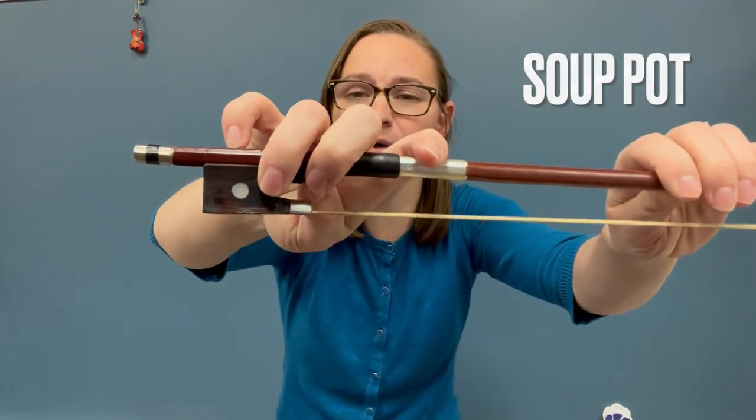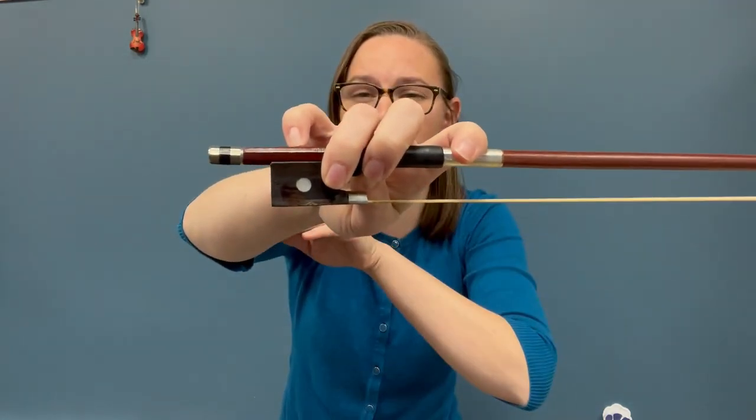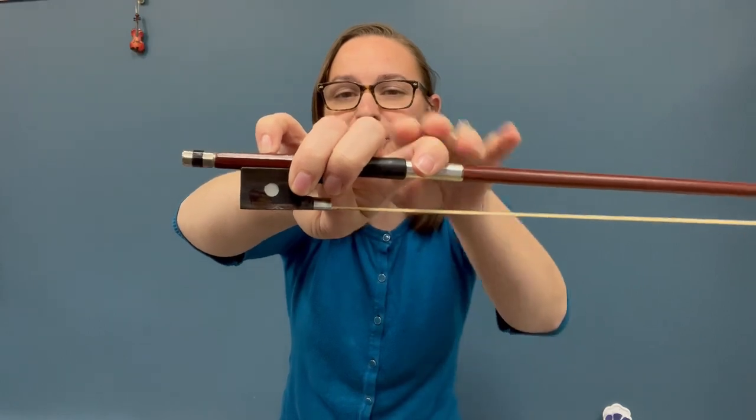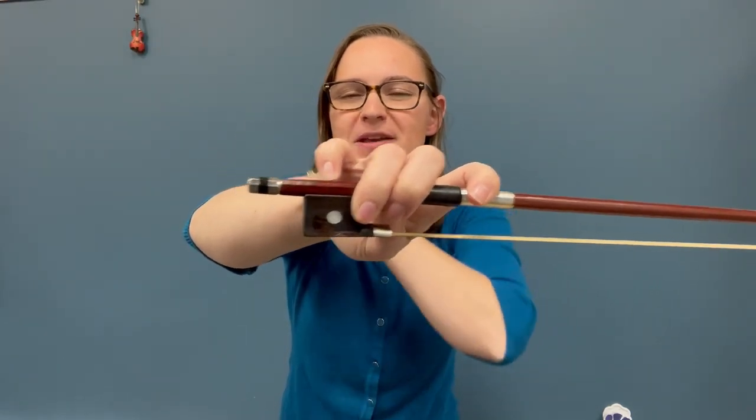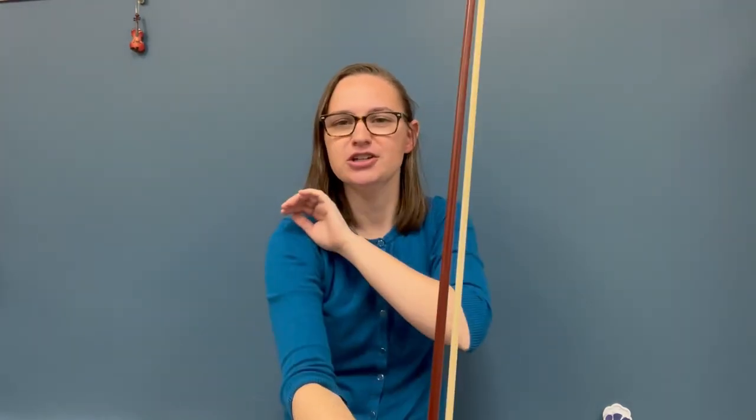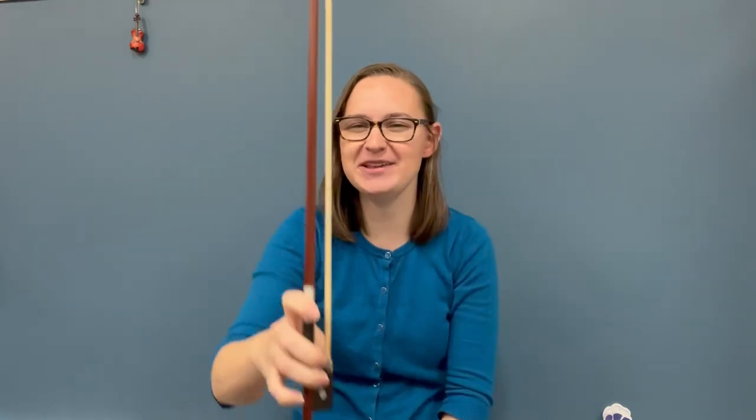This is our soup pot exercise. You still want to make sure you have a good bow hold: thumb bent, middle finger, ring finger are best friends wrapped around. Your pointer finger is curved and separate and your pinky is perched like a bird on a branch. Straight up and down just like we did for rocket ship again.